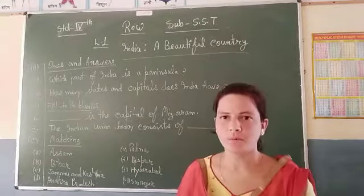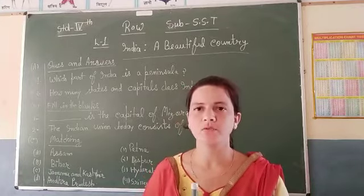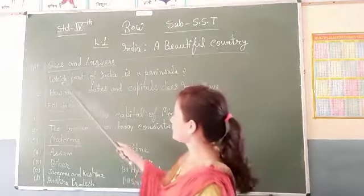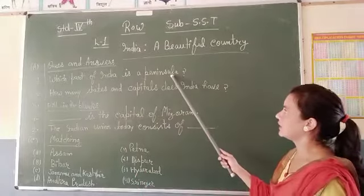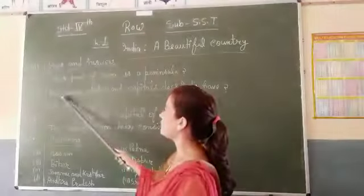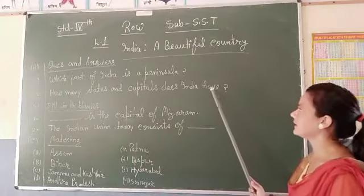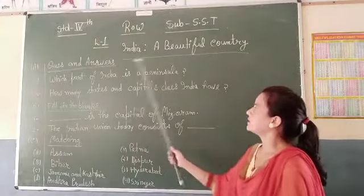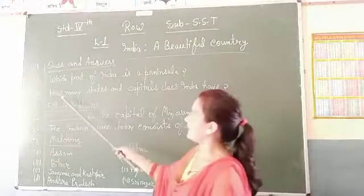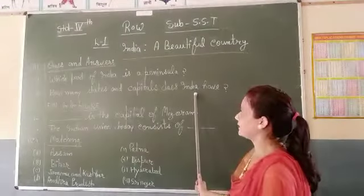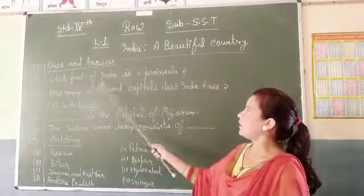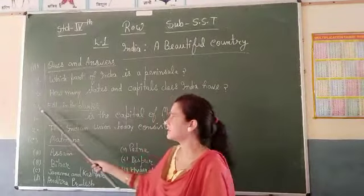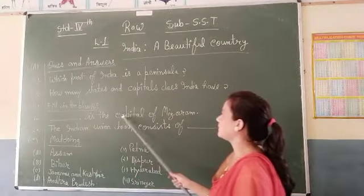You can do a copy from the very neat and clean handwriting. I have explained this test. The first question is which part of India is a peninsula? The second question is how many states and capitals does India have? Then, fill in those blanks for your question. The blank for your question is the capital of the majority.